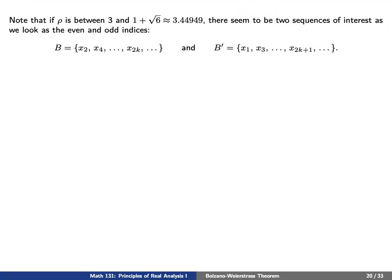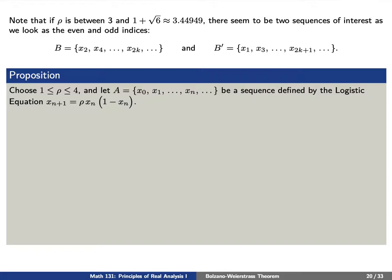In other words, if our rho is between 3 and 1 plus the square root of 6, roughly 3.44, there seem to be two sequences of interest if we look at the even versus the odd indices. So let's take a look at two different subsequences by pulling out numbers from our sequence A. We'll look at B, which consists of x sub 2k, and B prime, which consists of x sub 2k plus 1. We have a general statement: if rho is between 1 and 3, and x sub 0 is neither 0 nor 1, the sequence converges to rho minus 1 divided by rho. If rho is between 3 and 1 plus the square root of 6, the sequence A does not converge, but the two subsequences B and B prime do converge to two different limits.